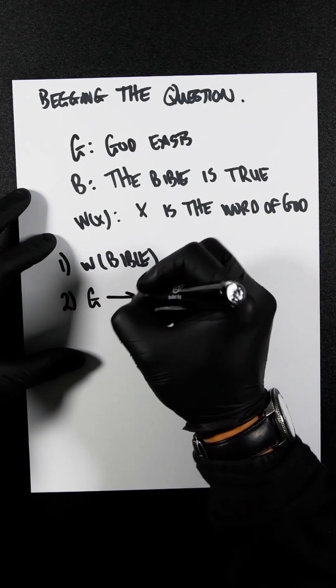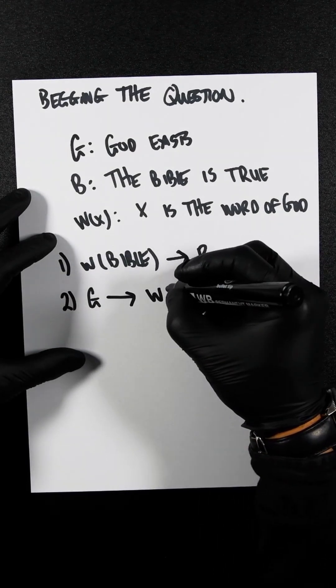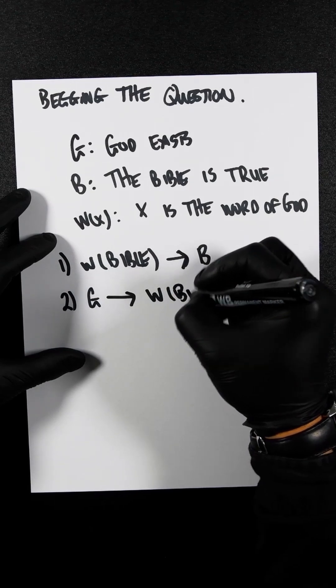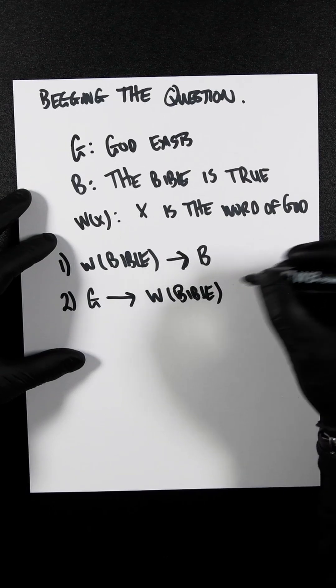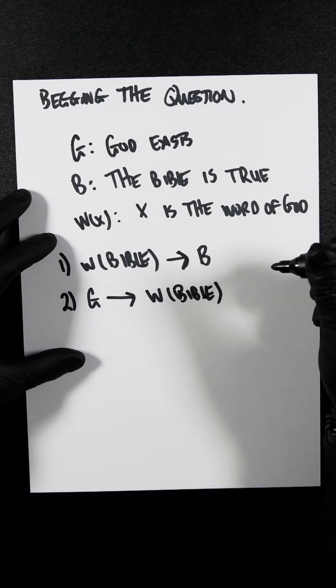And then we have G if-then W(Bible). So this means if God exists, then the Bible is the word of God.